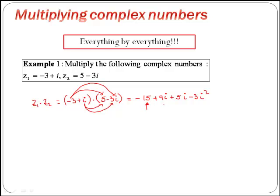We have this, which is a real part, this 9i and this 5i here, which are imaginary parts. And then what happens with this minus 3i squared?